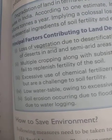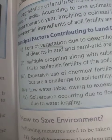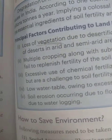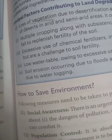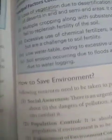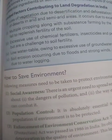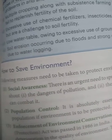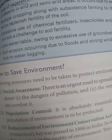So we have covered global warming, the state of environment in India, and the reasons and causes of degradation in India. Now we will move on to how to save the environment. The first is social awareness — there is an urgent need to spread social awareness about the danger of pollution and the way each individual can combat it. Second is population control — it is absolutely essential to check the rising population if the environment is to be productive.